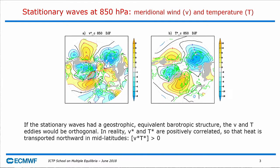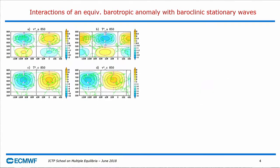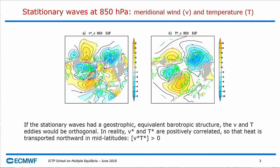In order to have transport of heat by the horizontal flow, you need to have a baroclinic structure — one where the streamfunction and temperature are not in phase. What happens is that the NAO anomaly is roughly equivalent barotropic, but this NAO anomaly is superimposed on climatological stationary waves, which are not equivalent barotropic.